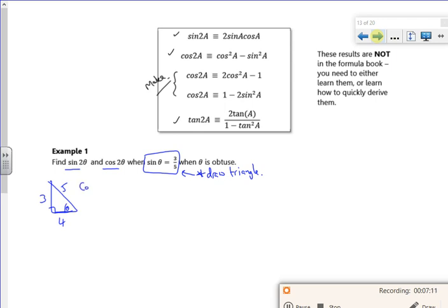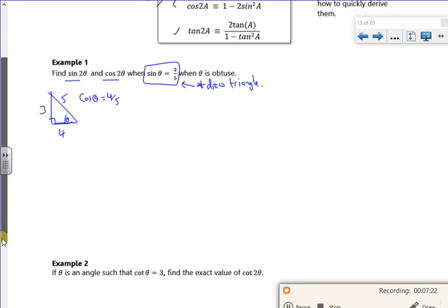Right. So what have I got then? So cos theta will be 4 over 5. And that's all I need isn't it? Because I'm not working out tan. I could work out tan too as well, couldn't I? Should we do that as a bonus?